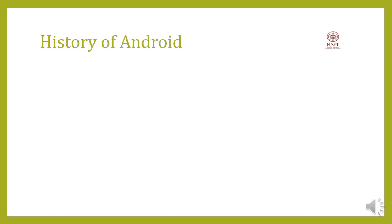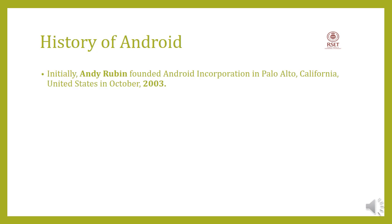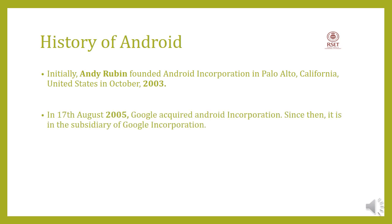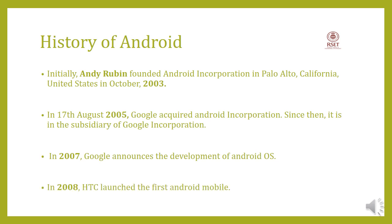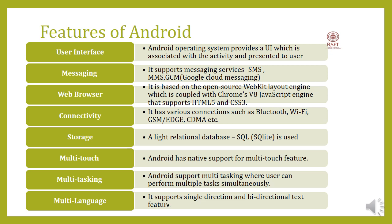Regarding the history of Android: Android was initially developed by Andy Rubin of Android Inc. in 2003. In 2005, Google acquired Android Inc. In 2007, Google announced the development of the Android operating system, and by 2008, HTC launched the first Android mobile device.